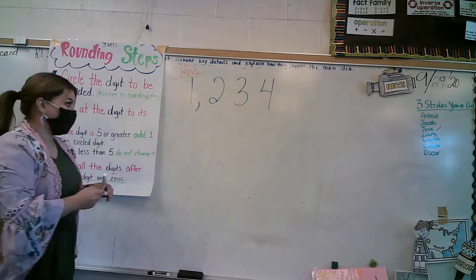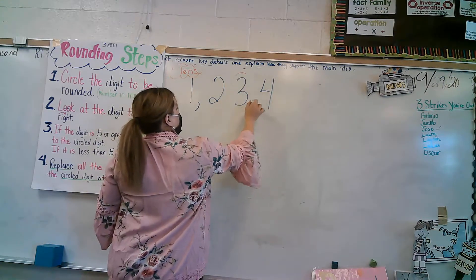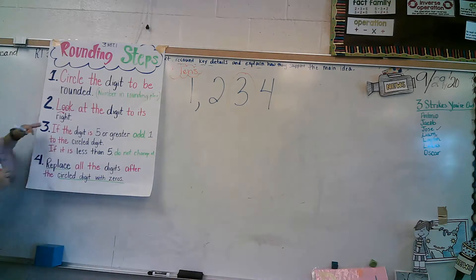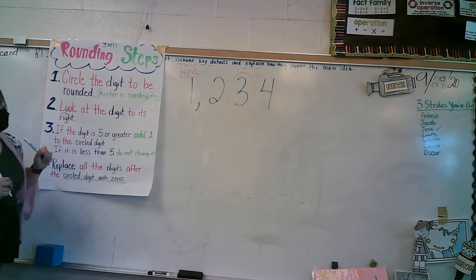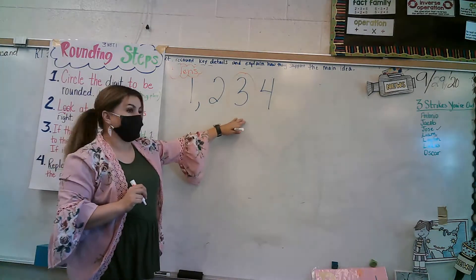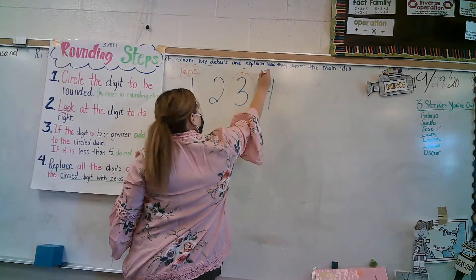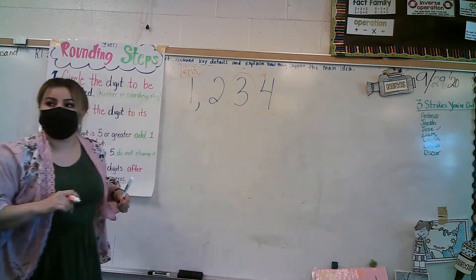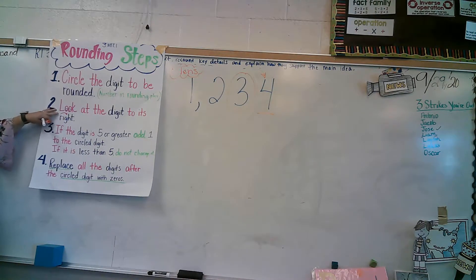Yeah, the three. So what do I do with it? I'm going to circle it. Now we're going to step two: look at the digit to its right. And what digit is to the right of the three? The four. So I like to draw a little arrow just to help me, and I like to underline it, just so I know that's the one. I have step one and step two finished.